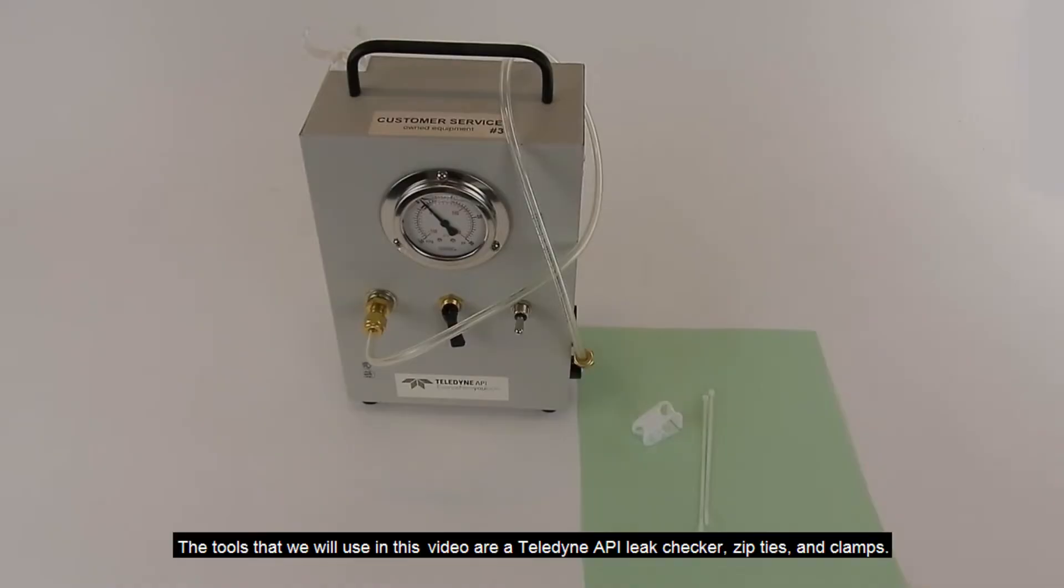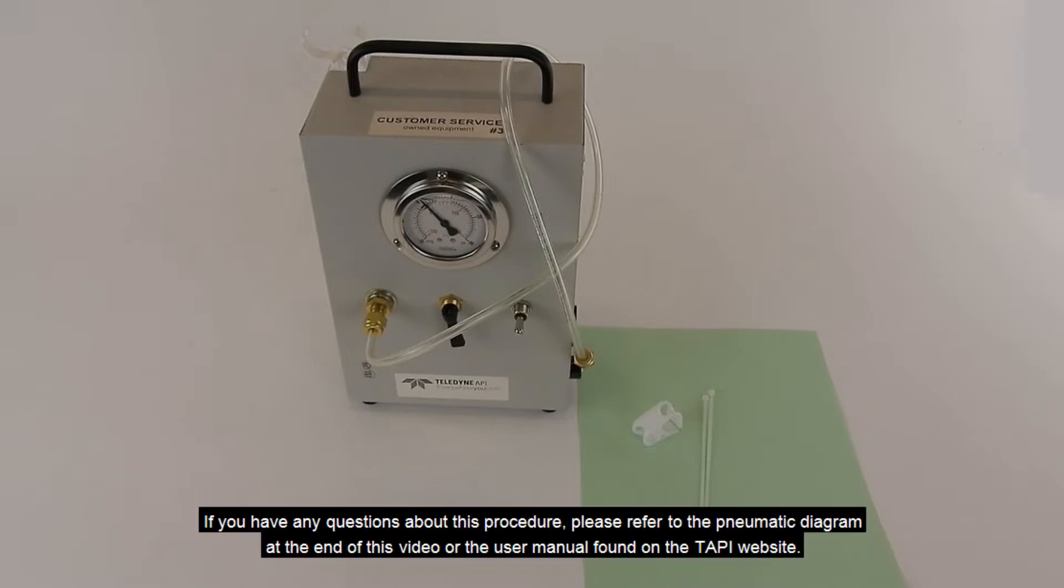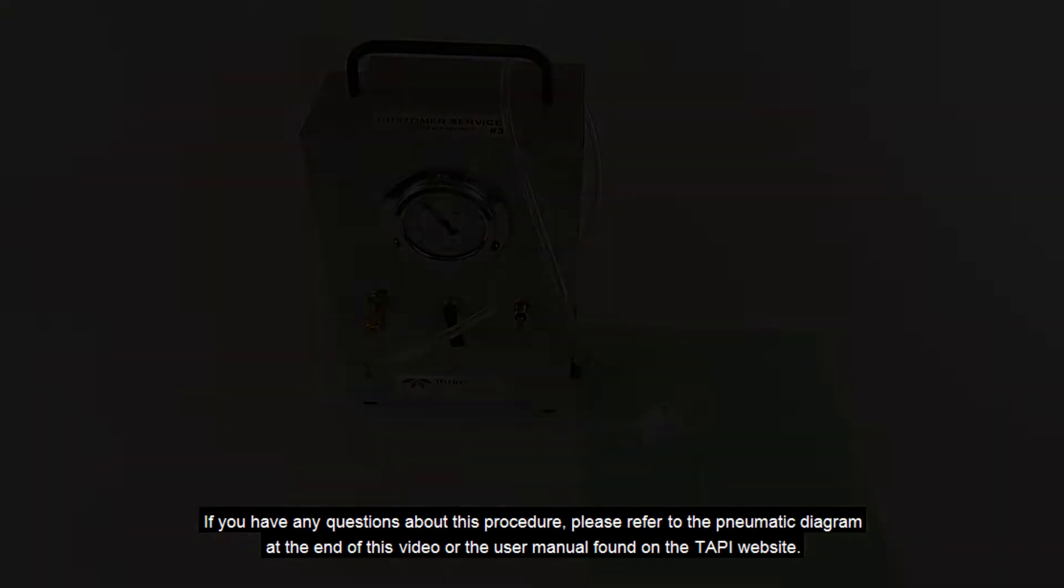The tools we will use in this video are a Teledyne API leak checker, zip ties, and clamps. If you have any questions about this procedure, please refer to the pneumatic diagram at the end of the video or the user manual found on the website.